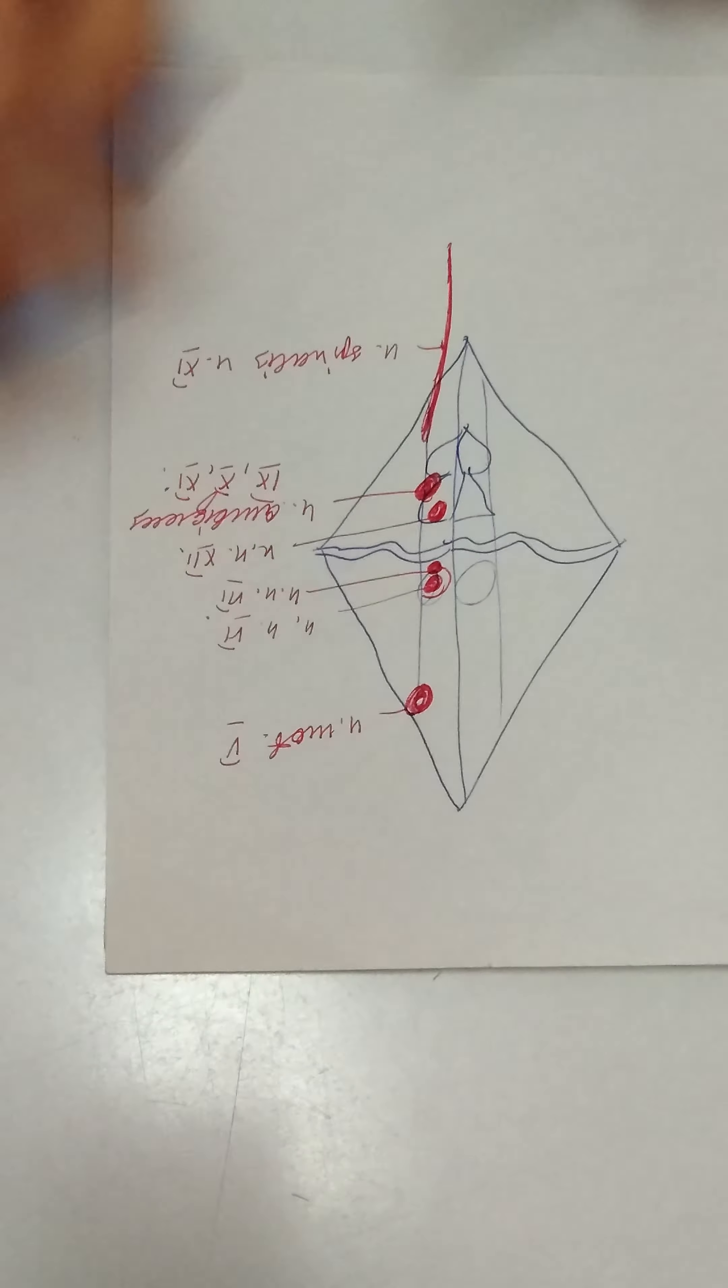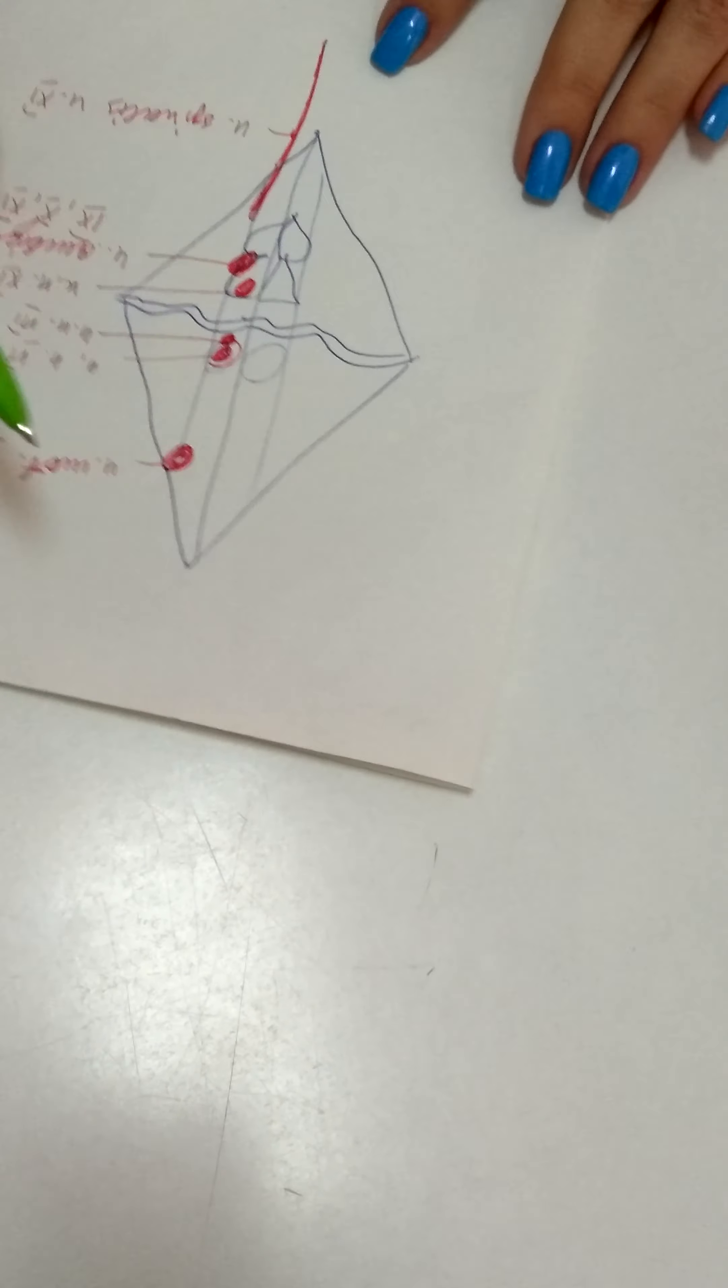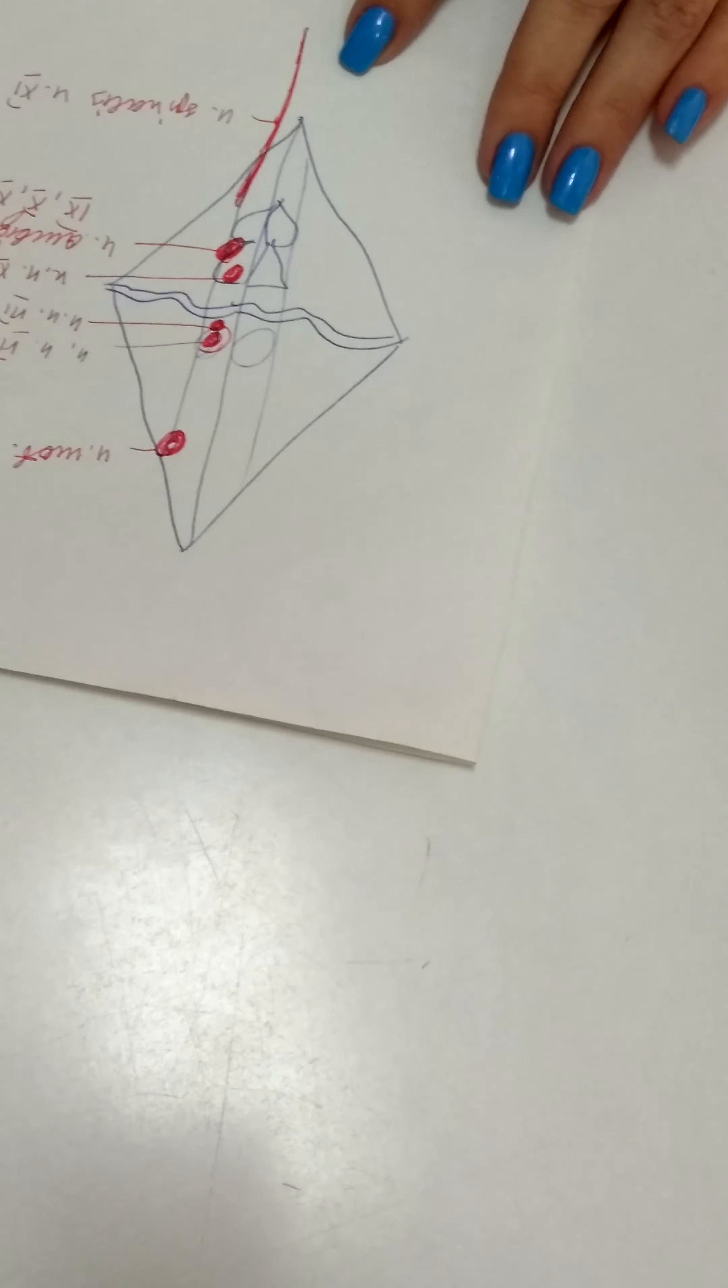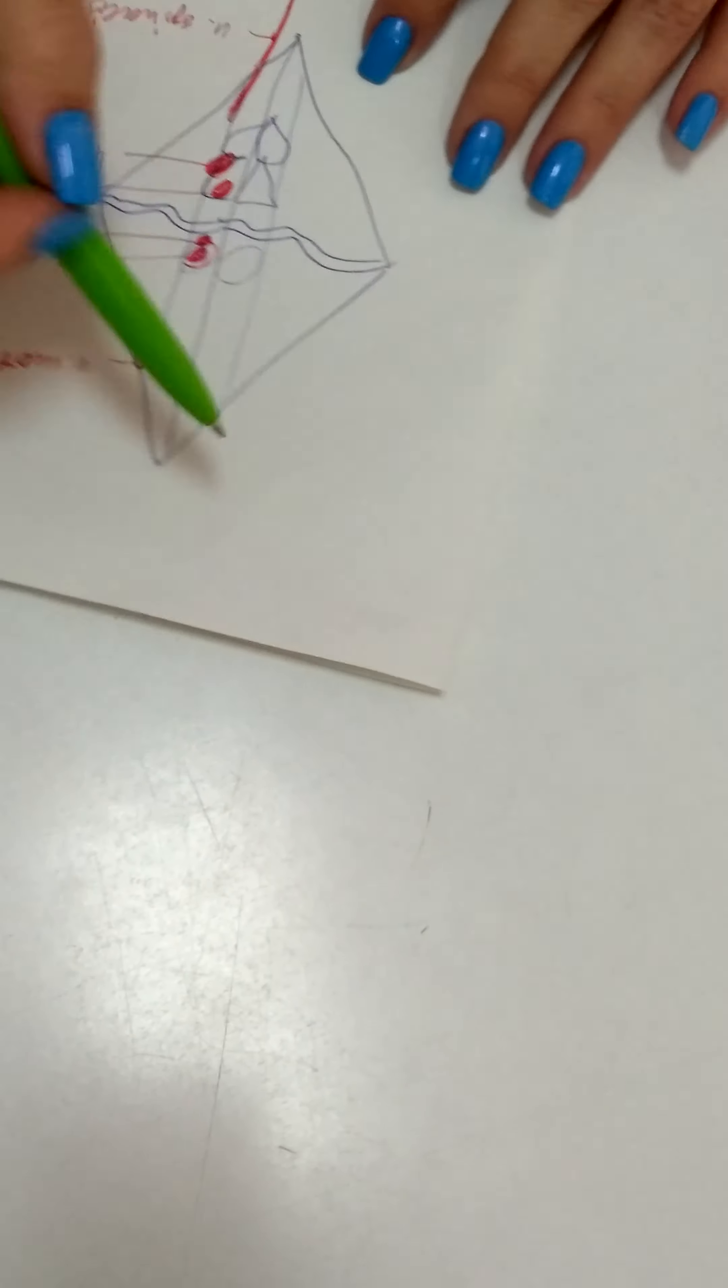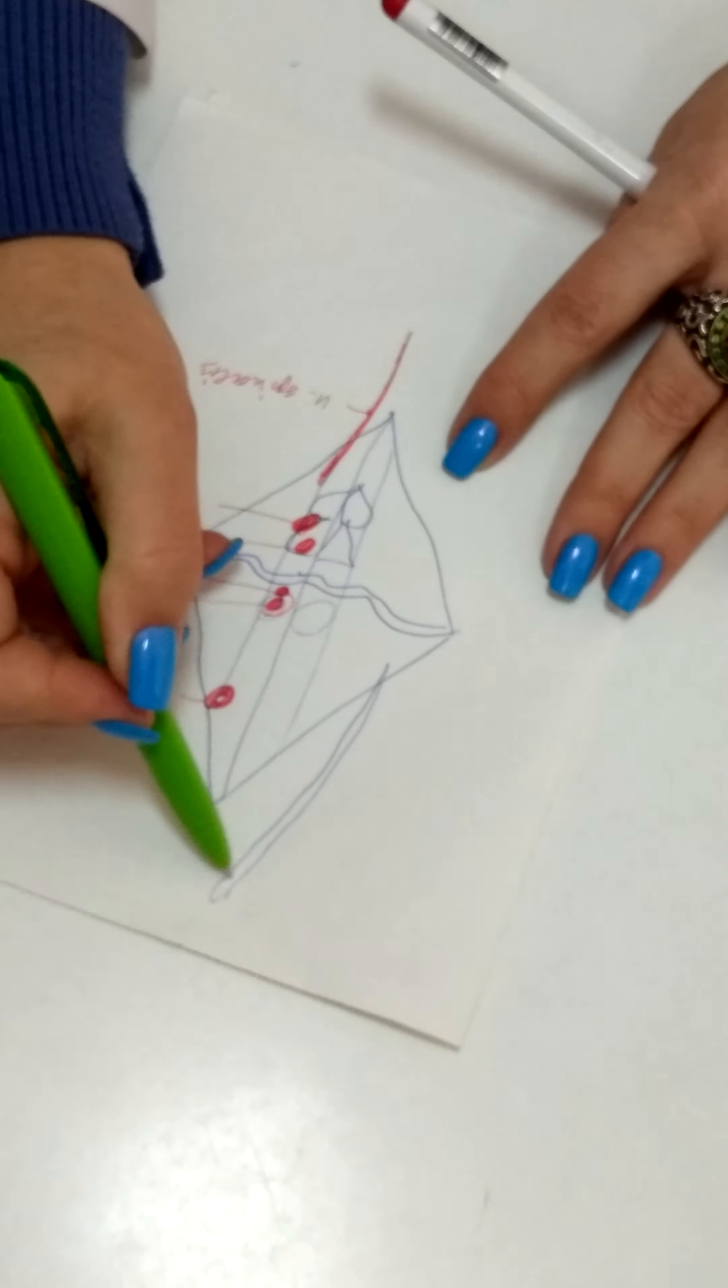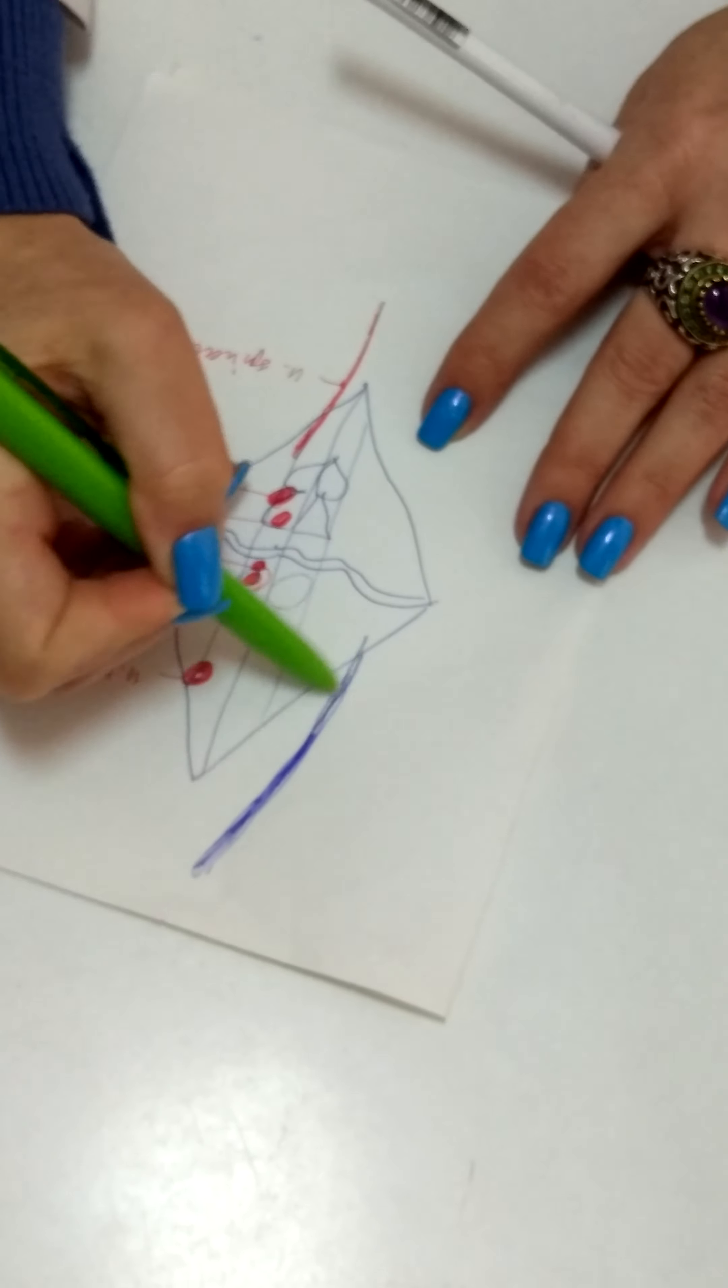Laterally in rhomboid fossa, some sensitive nuclei are present. First of all, nervus trigeminus has three sensitive nuclei which are named according to their topography. The upper nucleus is located in the midbrain up to the upper portion of the pons, and this nucleus is called nucleus mesencephalicus of nervus trigeminus.